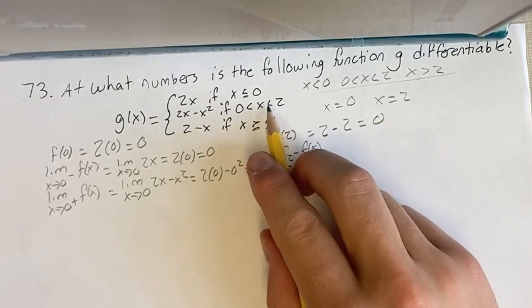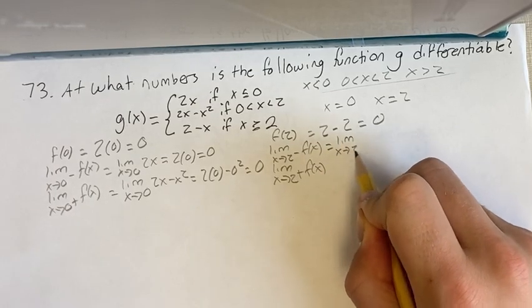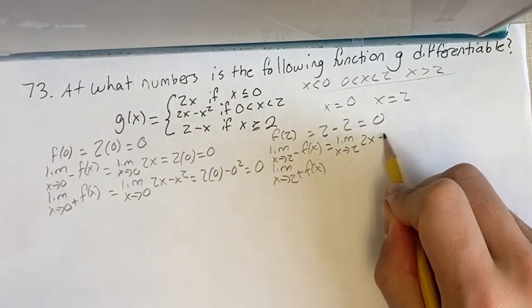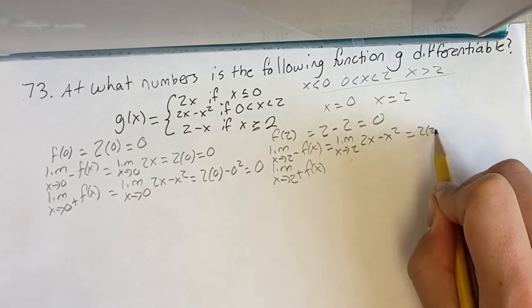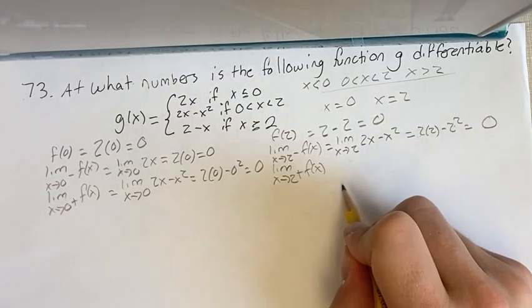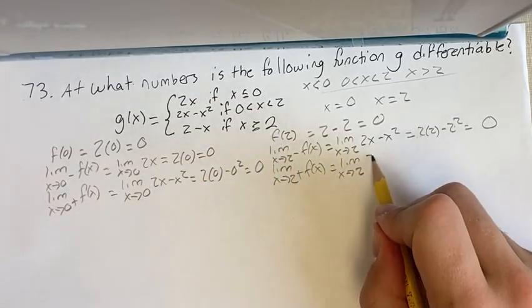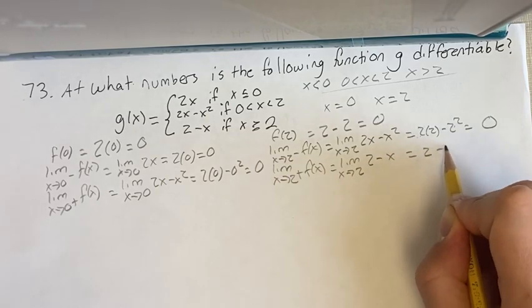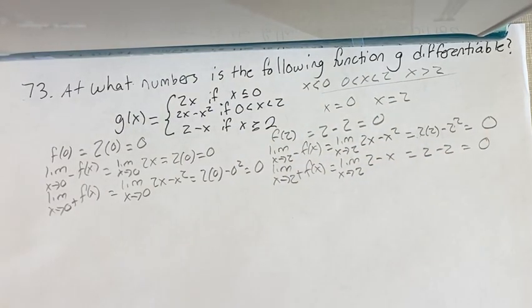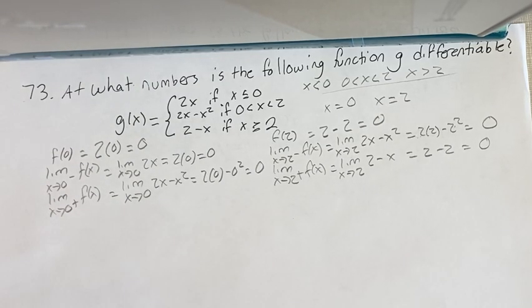Approaching from the left, x is less than 2, so the limit as x approaches 2 of 2x minus x squared, plugging in 2, you get 2 times 2 minus 2 squared equals 4 minus 4 is 0. And then here we have limit as x goes to 2 from the right, so 2 minus x should be 2 minus 2 equals 0. So we found that it's continuous on all real numbers, which is a prerequisite for it being differentiable.